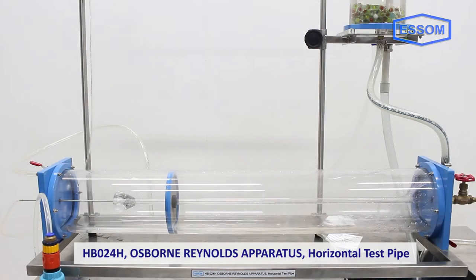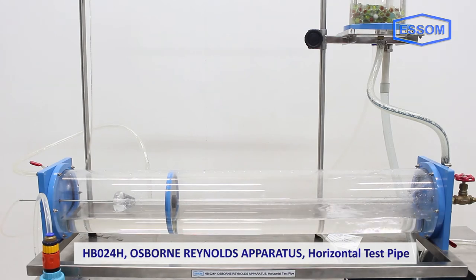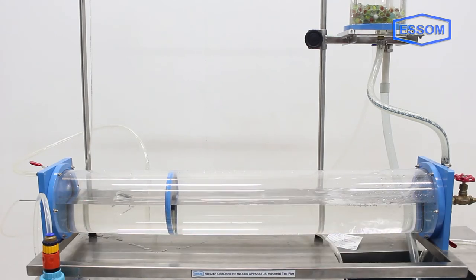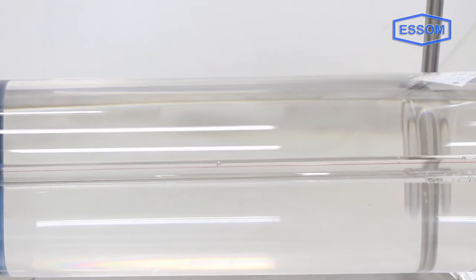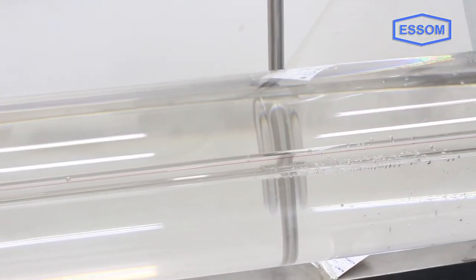HB024H Osborne Reynolds apparatus horizontal test pipe. This equipment provides laminar, transitional, and turbulent flow as predicted by Osborne Reynolds.